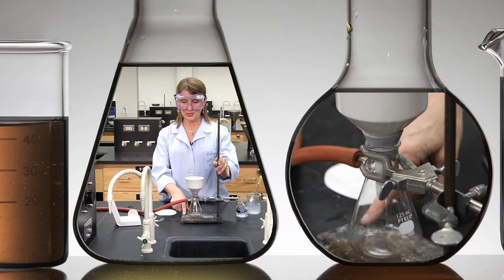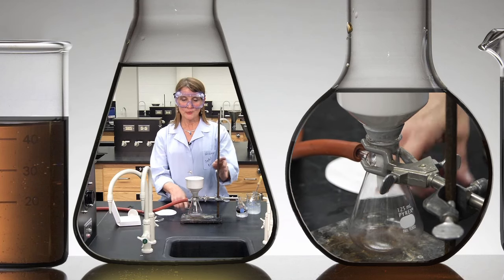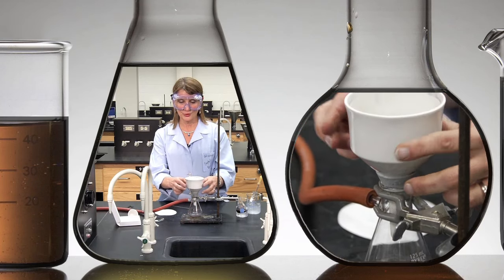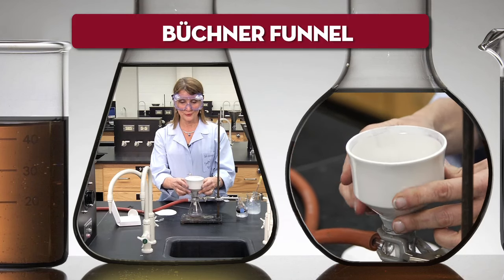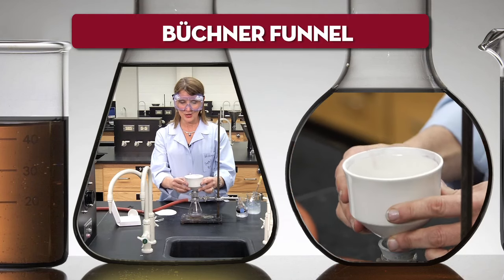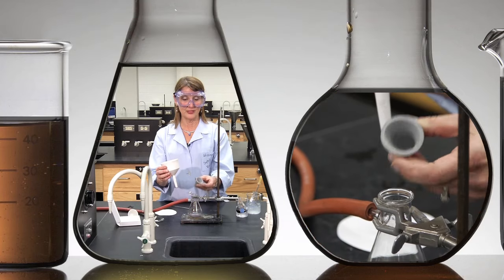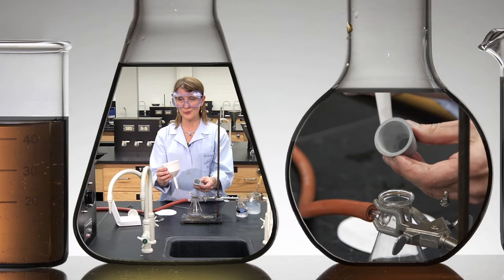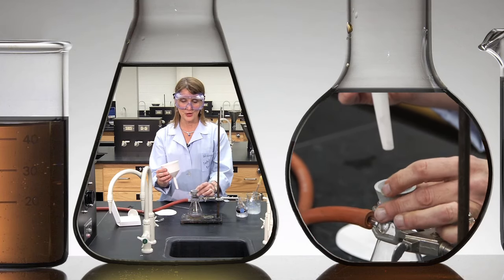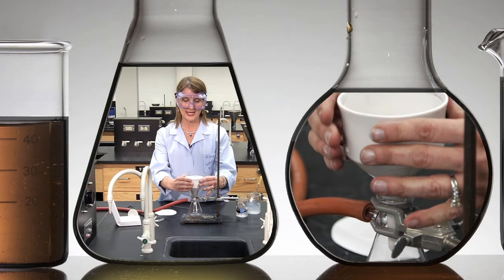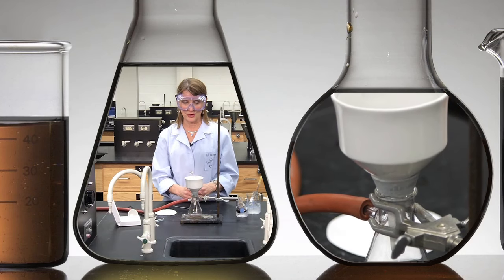This is a vacuum filtration apparatus. You start with choosing the correct size filter flask. This is a Buchner funnel, attached to a filter flask on top of a neoprene adapter. It's very important to have the neoprene adapter there so that there is a tight seal when a vacuum is formed.